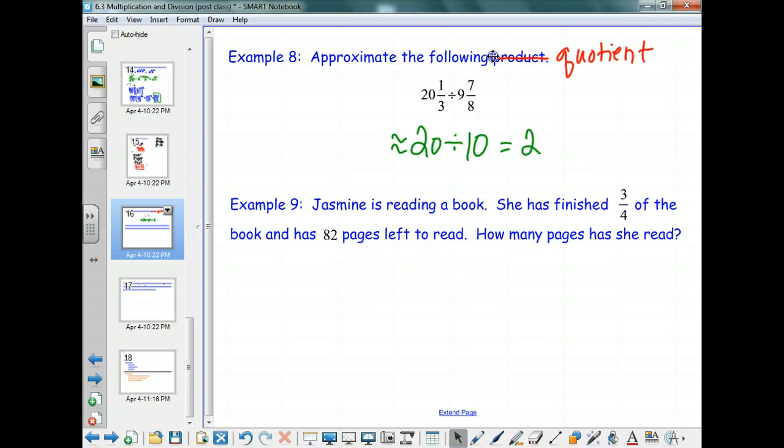So you're going to see what approximate means in your homework. All right. Example number 9 has several ways it can be worked. Jasmine is reading a book. She's finished three-fourths of the book. And she has 82 pages left to read. How many pages has she read? What are we going to do? There's several ways to do that. So a suggestion. Okay. 82 times 3. Lauren, why do we want to do 82 times 3? How would that help us? What would that be? Okay.